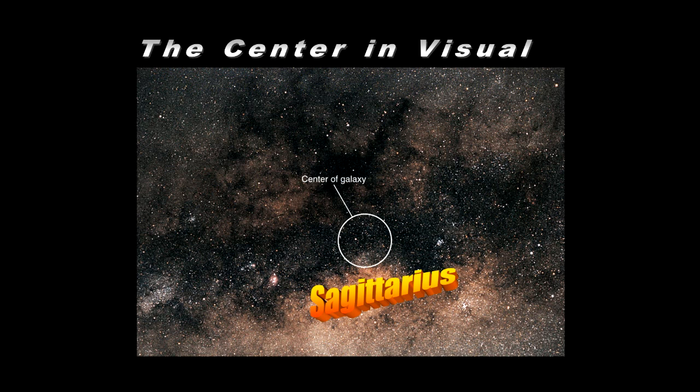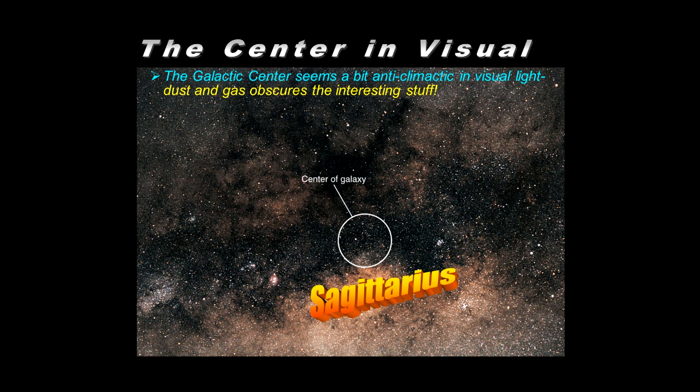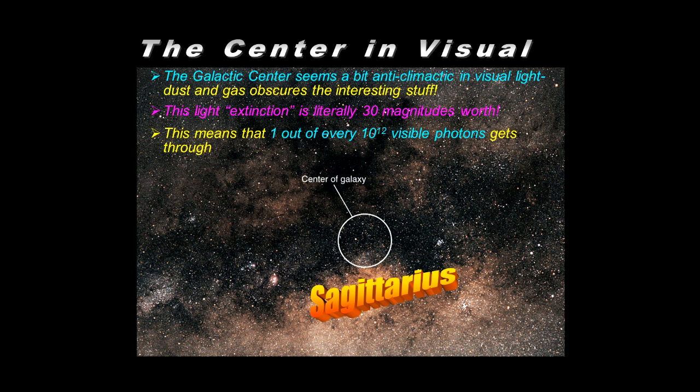As we look to the center of our galaxy in visible light, it's not all that impressive. And the reason is, as we've already come to know, the gas and dust obscures our view. But this obscuration, or this extinction of light as a result of the dust, is very tremendous. In fact, it's about 30 magnitudes worth. What does that mean? That means about one out of a trillion visible photons actually gets through. Therefore, we really don't see anything in visible light toward the center of our galaxy. So that's something to keep in mind as we consider the difficulty in mapping our galaxy from what we see.